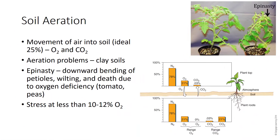In general, at soil oxygen levels that are less than 10 or 12 percent, plants undergo stress that limits plant growth. Maintaining proper soil aeration and water aeration is important for hydroponically grown plants to maximize plant growth and subsequent crop yields. Oxygen levels in the soil are also critical to a variety of microorganisms that are necessary for good soils.